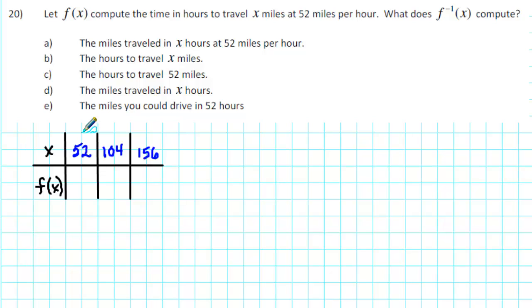For x equals 52, we need to compute the time that it takes to travel 52 miles at 52 miles per hour. Well, that's 1 hour.